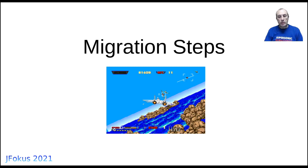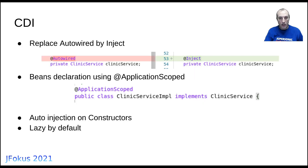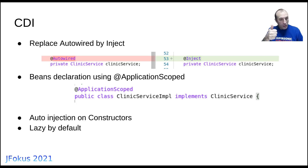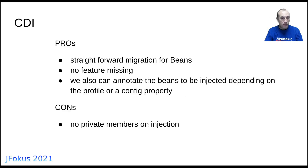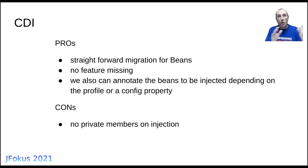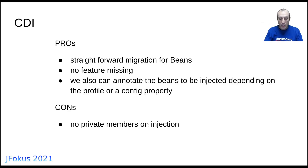Let's focus on the migration steps. For CDI, it's a matter of replacing @Autowired with @Inject, and changing @Component or @Service to @ApplicationScoped. You get auto injection on constructors, and beans are lazy by default — which is very beneficial for boot time. You can also annotate programmatic beans to be instantiated based on the active profile or even a config property value.